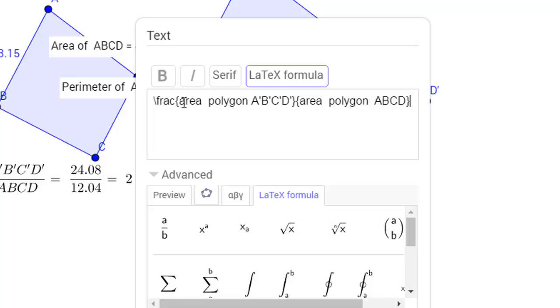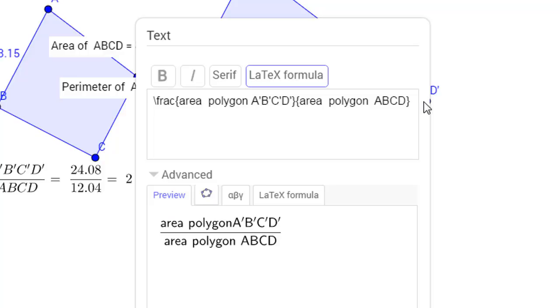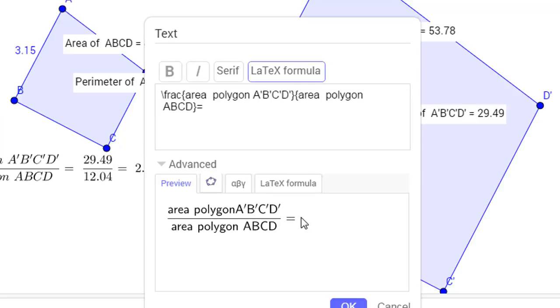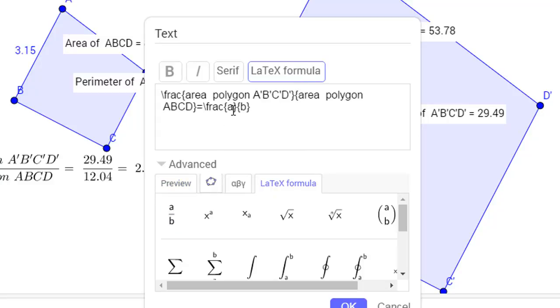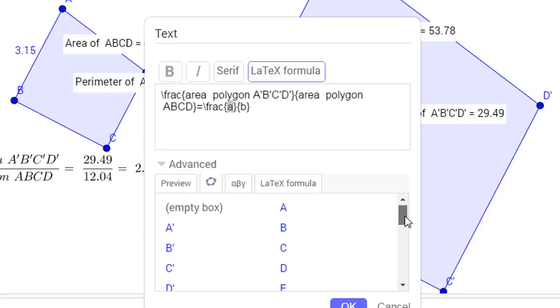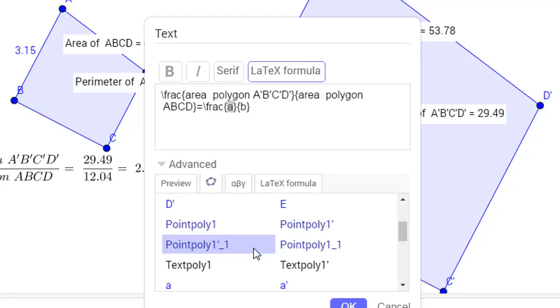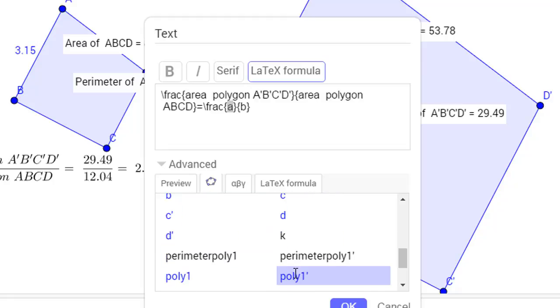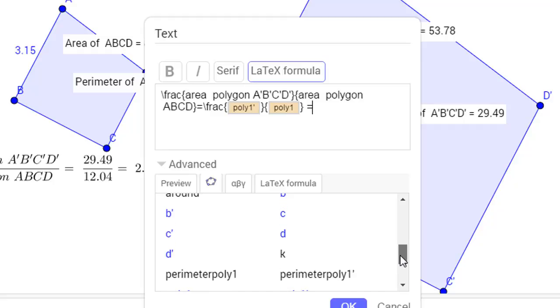And we're going to let that be equal to, we can preview and see what it looks like so far. And we're going to go get our LaTeX formula again. A over B in place of A, the GeoGebra icon, poly 1 prime. In place of B, poly 1. And we'll place an equal sign afterwards. And then we're going to get poly area.